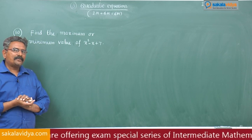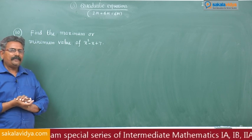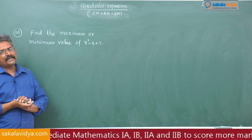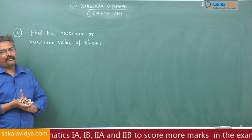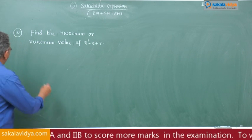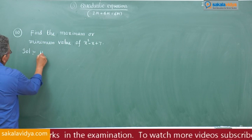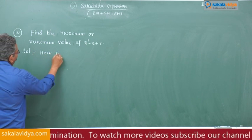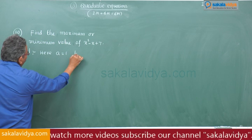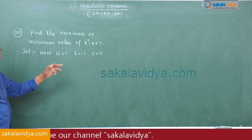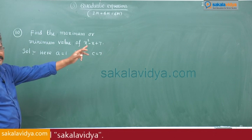Whenever x square coefficient is positive, the value will be minimum only. When x square coefficient is negative, it attains maximum value at x is equal to minus b by 2a. So first of all, here a is equal to 1, b is equal to minus 1, c is equal to 7, comparing with ax square plus bx plus c.